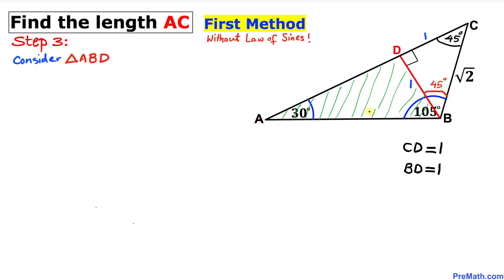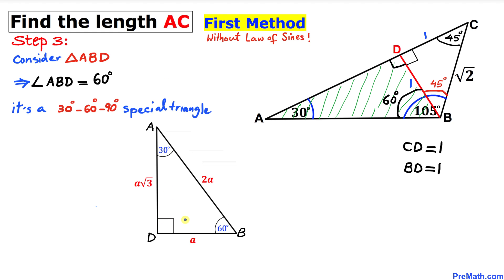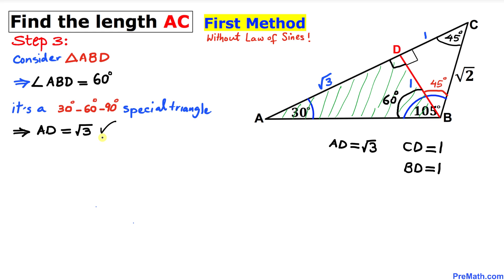Now let's focus on triangle ABD. We know angle D is 90 degrees and angle A is 30 degrees, so angle ABD must be 60 degrees. This is a 30-60-90 degree special triangle. In this special triangle, if the short leg is 1, the hypotenuse is 2 and the longer leg is square root of 3. In our diagram, BD is 1, so side AD must be square root of 3.